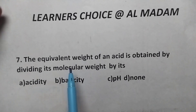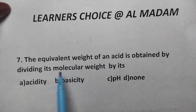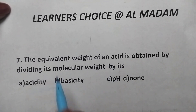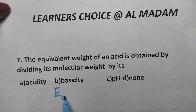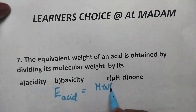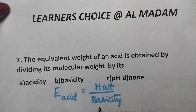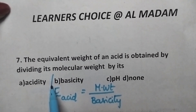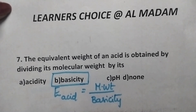The equivalent weight of an acid is obtained by dividing its molecular weight by its? Generally, in order to calculate the equivalent weight of an acid, it can be obtained from its molecular weight divided by basicity. Basicity means the number of replaceable hydrogen atoms. And hence option B is the right answer.